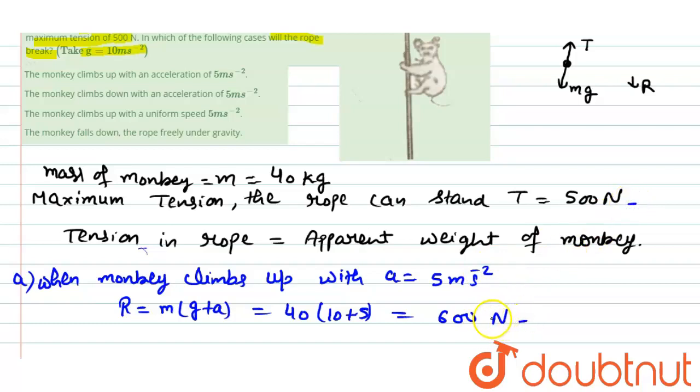We can say here that rope will break if R exceeds T. In this case, R is greater than T.